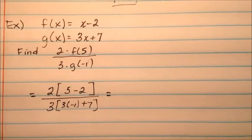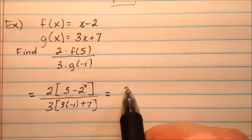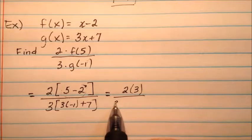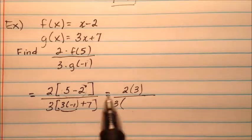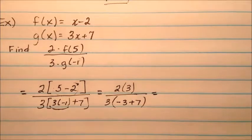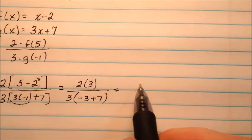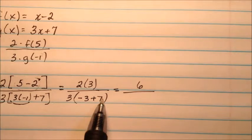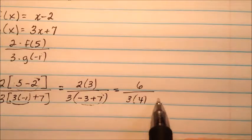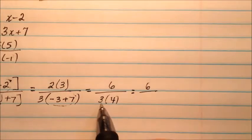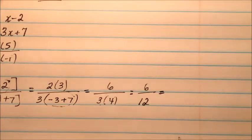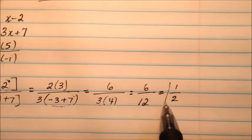We can work our way across here. So this 5 - 2 will be 3, so 2 times 3 for the numerator. The denominator will be 3 times, we've got 3 times negative 1 is negative 3, and then plus 7. So as we continue over, 2 times 3 is 6, over negative 3 + 7 will be 4, so 6 over 3 times 4 is 12, so this is actually going to come out pretty nice. So 6 over 12 can be reduced just to 1/2.